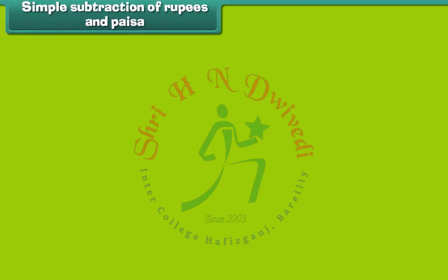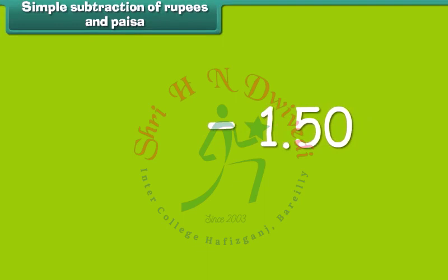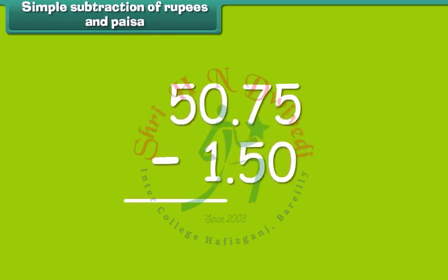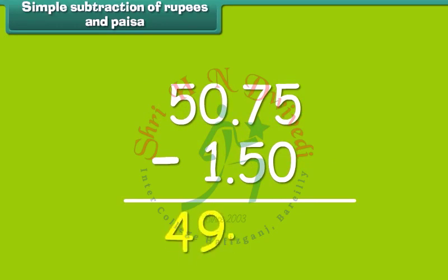Subtraction of rupees and paisa is simple. Subtract 1 rupee 50 paisa from 50 rupees 75 paisa. We first subtract numbers in the paisa column and then in the rupee column. So, the answer is 49 rupees and 25 paisa.